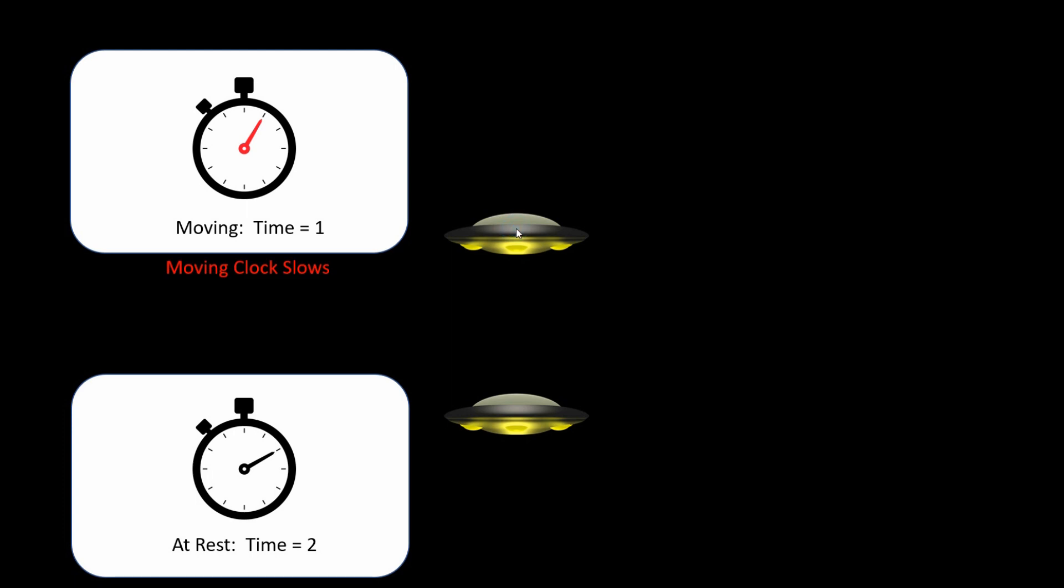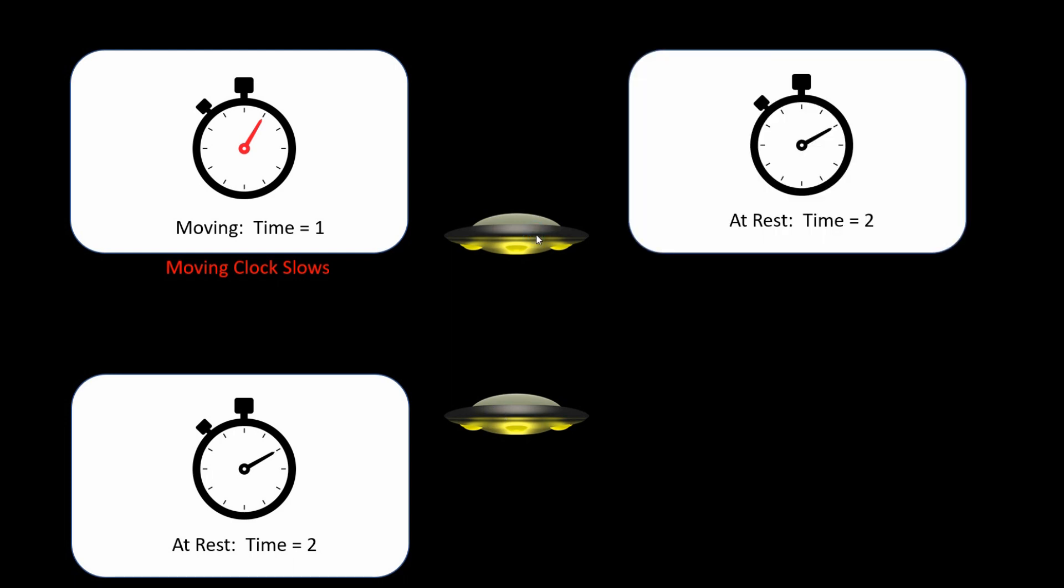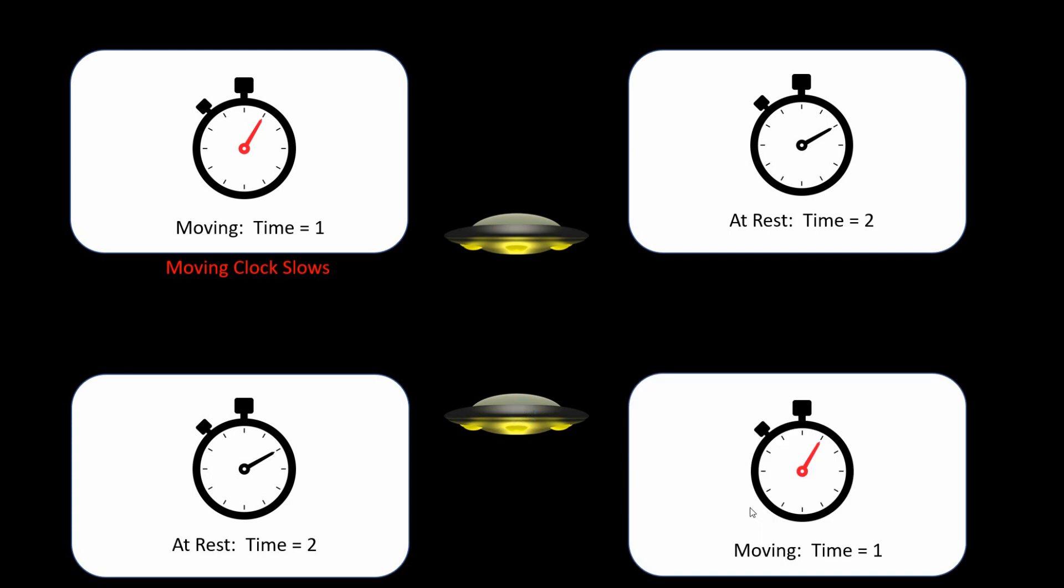But using the principle of relativity, we can say that this spaceship was at rest and this one was moving. So we have a rest time of 2, and now this one has a clock that is moving slower. This is the basic clock paradox, and this is the beauty of the principle of relativity. It's very symmetric, but it creates an illogical contradiction. Which clock is actually moving slower?